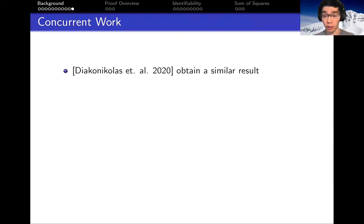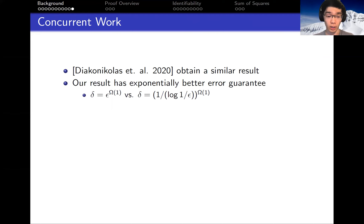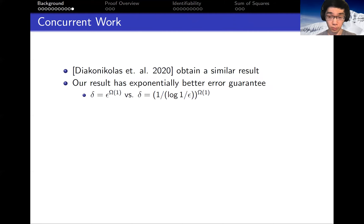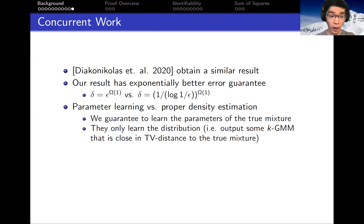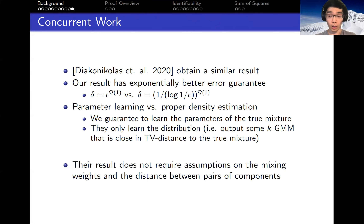There was also concurrent work by Diakonikolas et al. in 2020 obtaining a very similar result. Our result gets an exponentially better error guarantee: we get epsilon to a positive constant, whereas their accuracy is one over log(1/epsilon) to some positive constant. We do parameter learning, whereas they do proper density estimation — we learn the parameters of the true mixture, while their algorithm only guarantees outputting a GMM close to the true GMM. On the other hand, their result is stronger in that they do not require assumptions on the mixing weights or the distance between pairs of components.